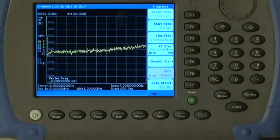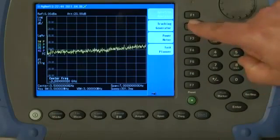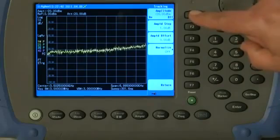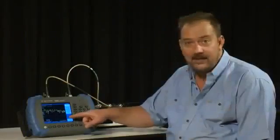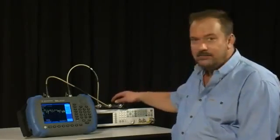So to turn the tracking generator on, we press the mode button, and press tracking generator, and we will turn the tracking generator on. And here you can see a response over the entire frequency range of the instrument, that is 7 GHz, of this filter, which I happen to know is around the 430 MHz band.